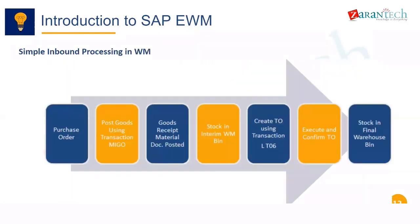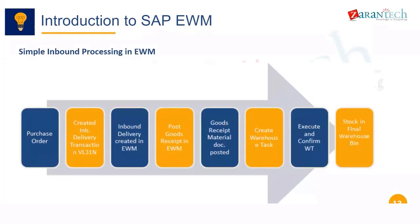Let's understand a typical process of SAP EWM by executing a basic inbound process. First let's compare EWM processing to SAP WM — in WM, you would create a purchase order, post goods receipt using MIGO, then create transfer requirements and transfer orders, confirm them, and the putaway was completed. In EWM, we create a purchase order, but the receipt is done via inbound delivery — inbound delivery is mandatory. After creating the inbound delivery, we create and confirm tasks to store the product into the final bins.